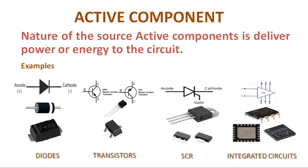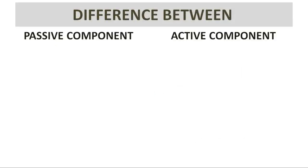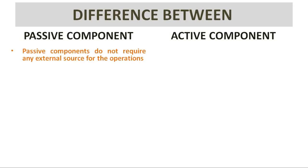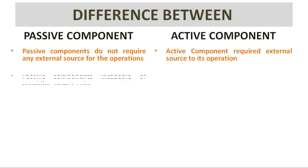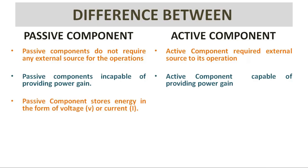Let's see the difference between passive components and active components. Passive components do not require any external source for their operations. Active components require an external source for their operation. Passive components are incapable of providing power gain; active components are capable of providing power gain.